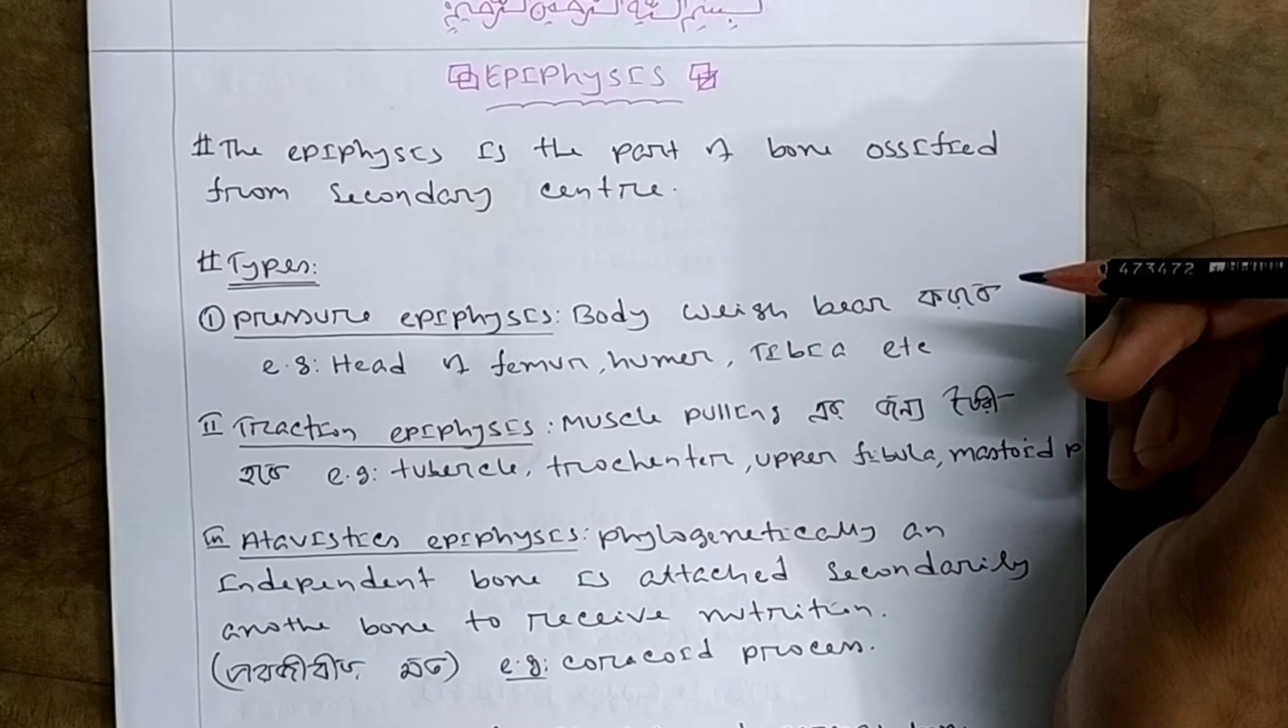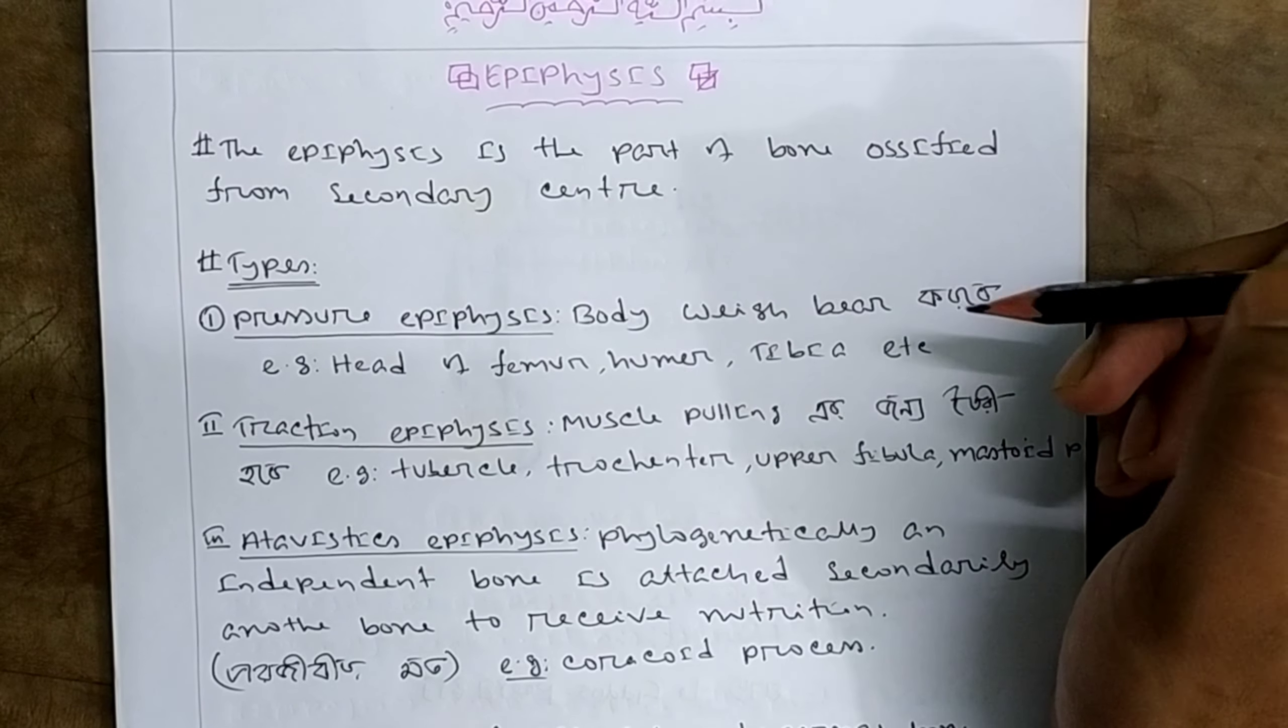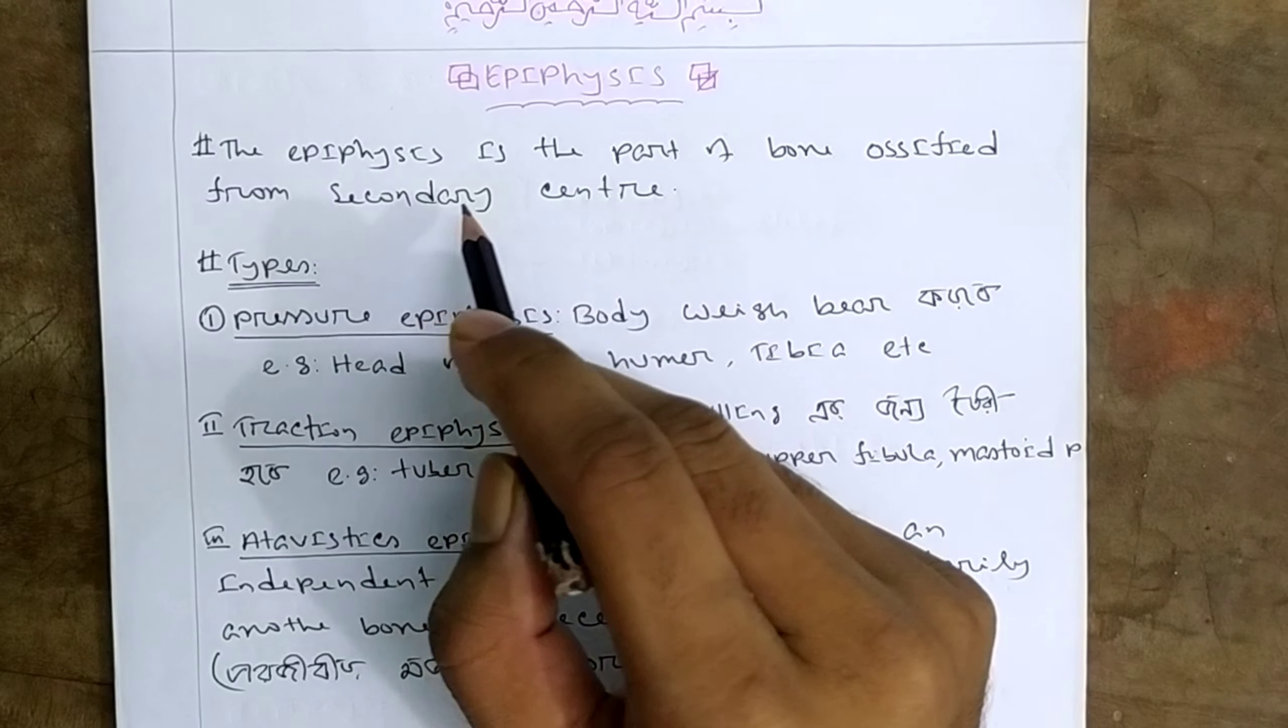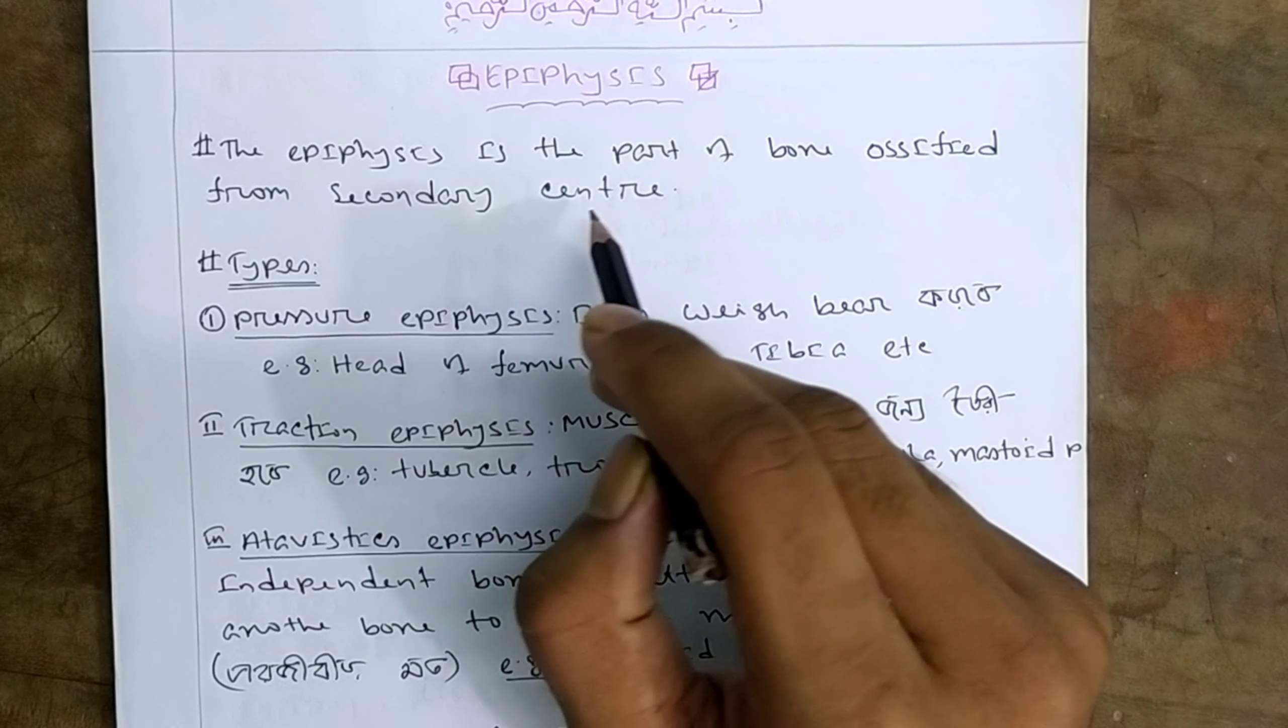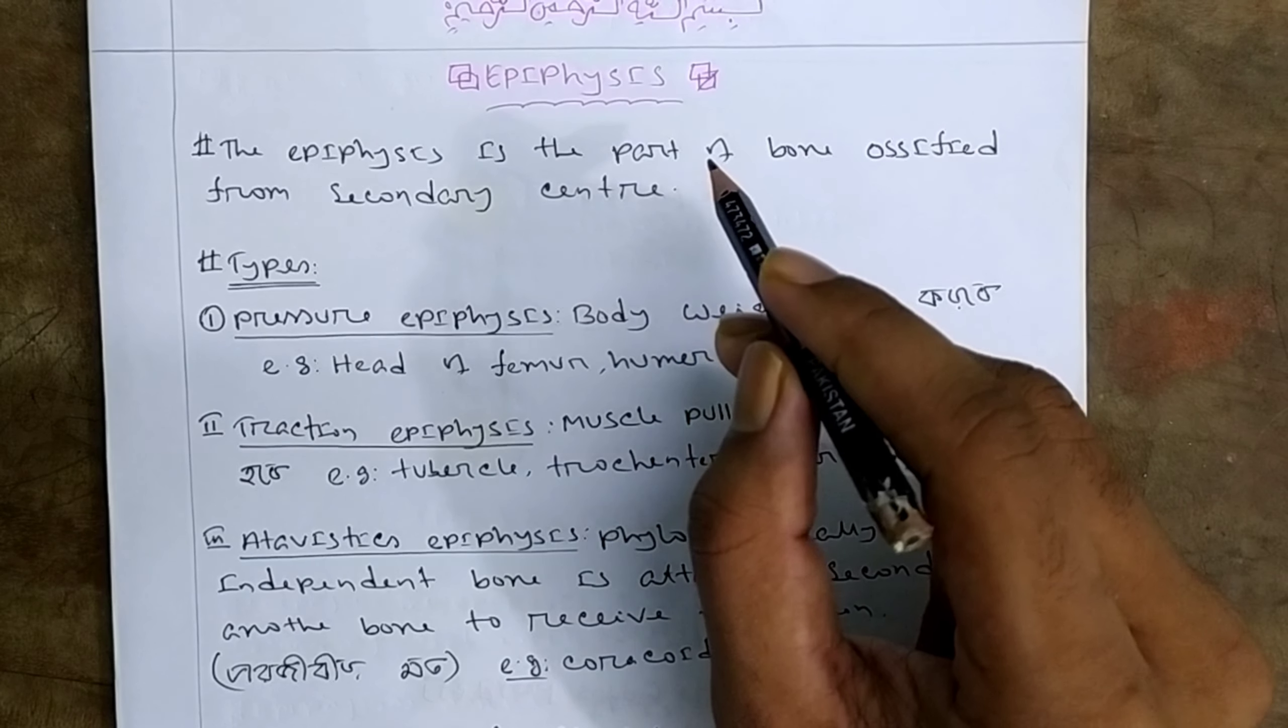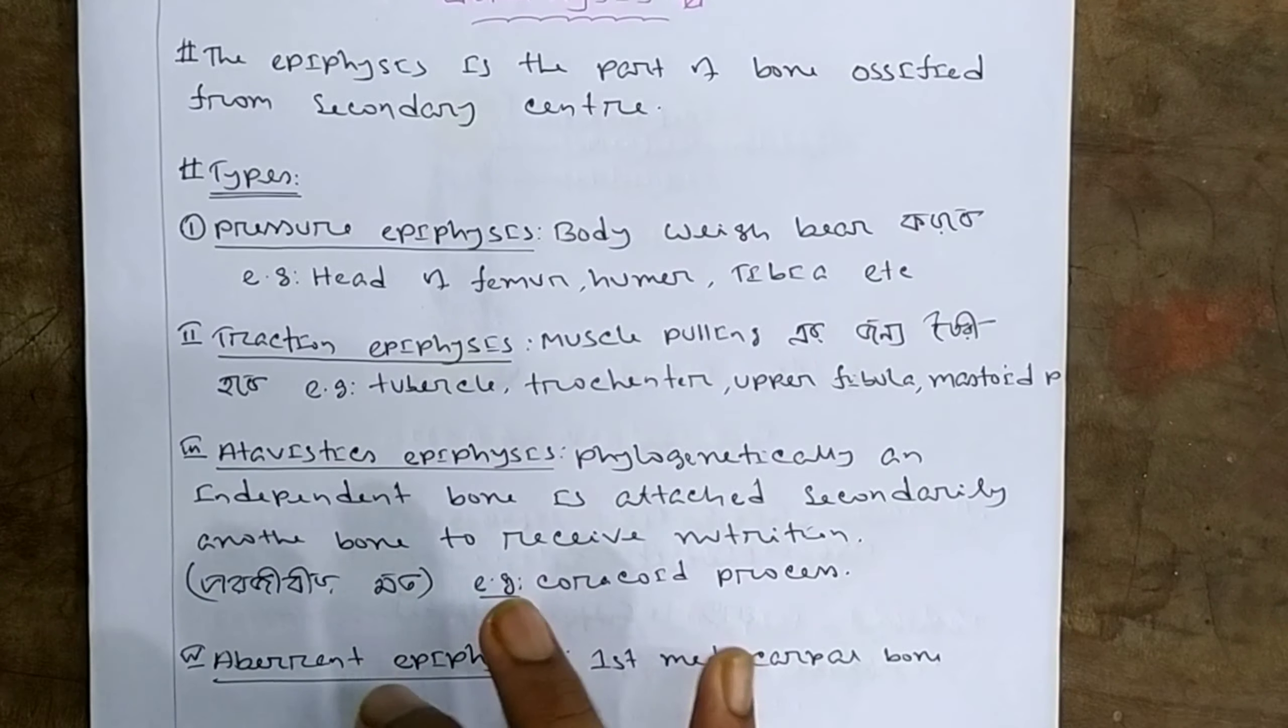The growing long bone has epiphysis. This epiphysis is the part of bone that ossifies from the secondary center. There are different types of epiphysis.